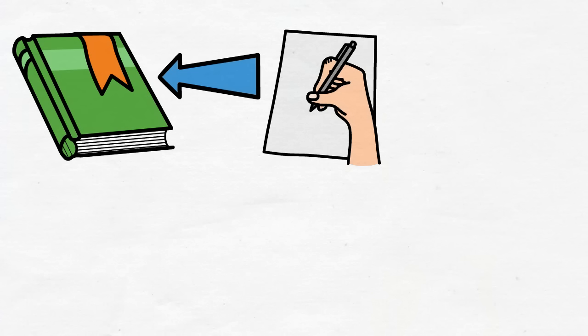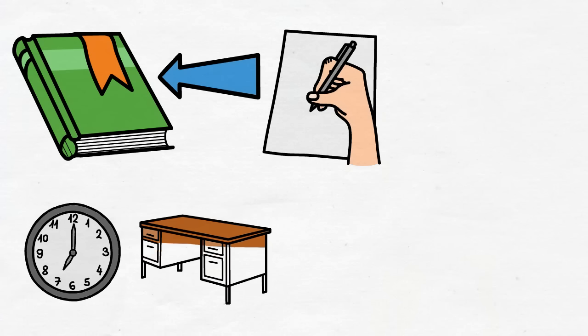So instead of burdening himself with, oh, I have to write this book... He focused on his daily objective, which was to start writing at 7am every morning, at his writing desk, for a minimum of 2 minutes. If Mike managed to do that, he successfully followed his system for the day.